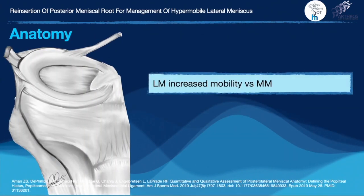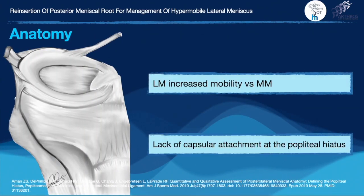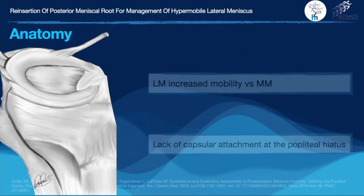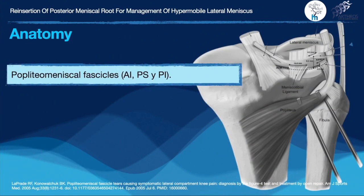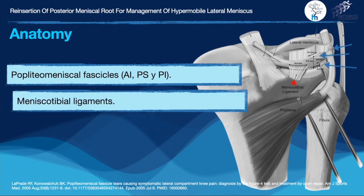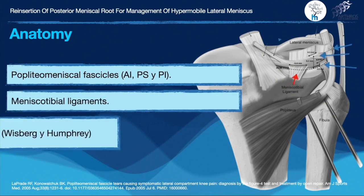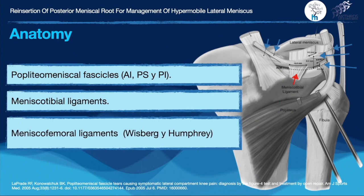The lateral meniscus has more mobility compared to the medial because of the lack of attachment at the popliteal hiatus. The stability of the lateral meniscus is given by the three fascicles, meniscotibial ligaments, and meniscofemoral ligaments.